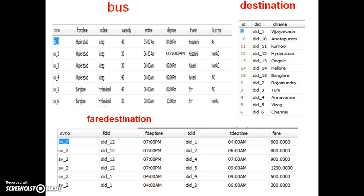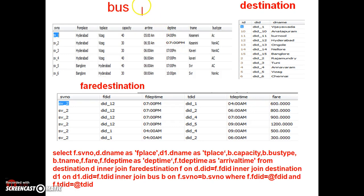Joins are used to retrieve data from more than one table. In order to work with joins, we need to give alias names to both tables. For the bus table the alias name is B, for the destination table the alias name is D. I want to display the service number from fare destination, as well as the from place and to place names.